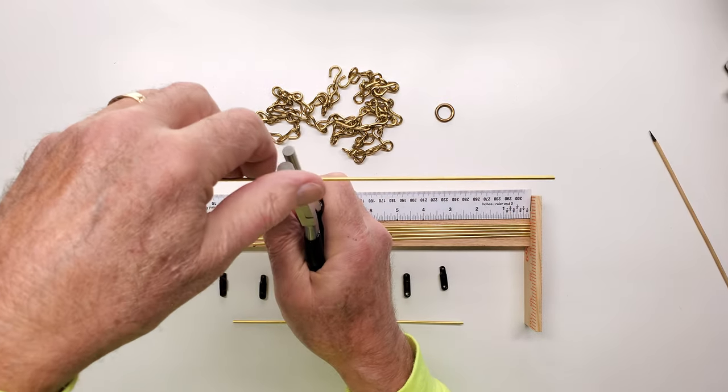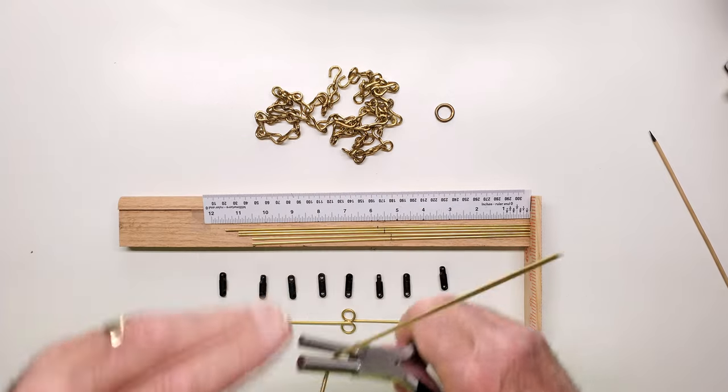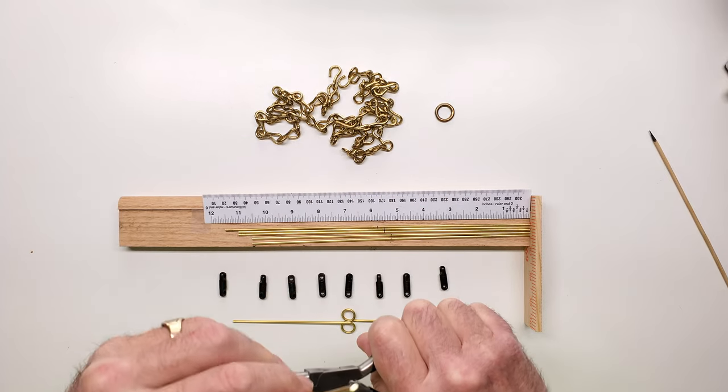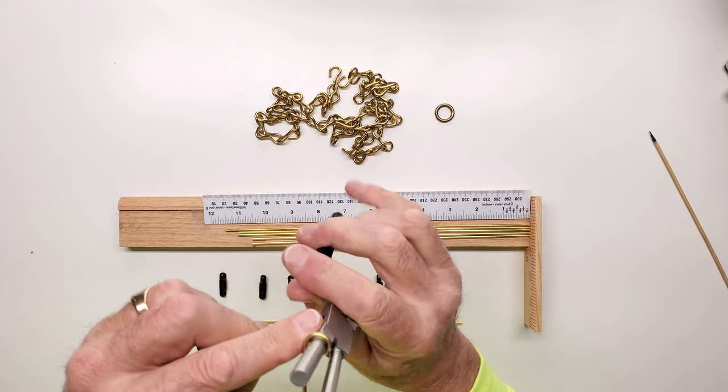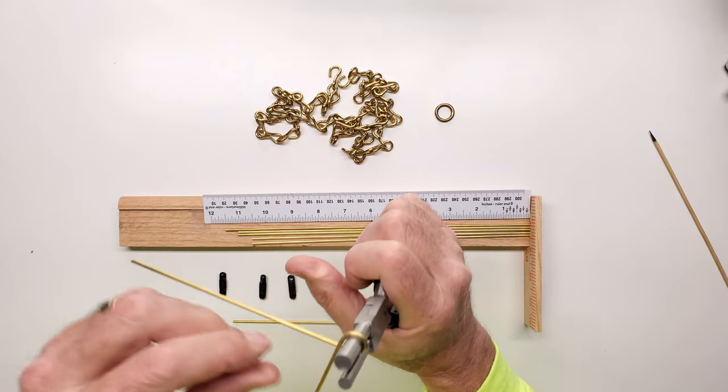So, I'll be taking each one of these brass rods, and I'll be creating my double loop.